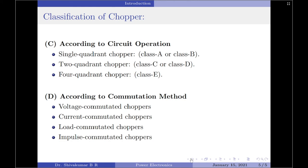Lastly, according to the commutation method employed, the choppers can be classified into 4 types. The first one is a voltage commutated chopper, the second one is the current commutated chopper, third is the load commutated chopper and the last the impulse commutated chopper.